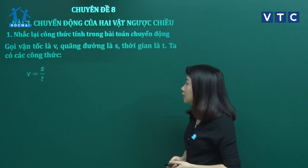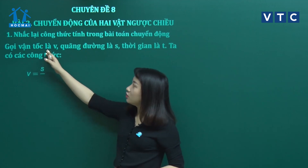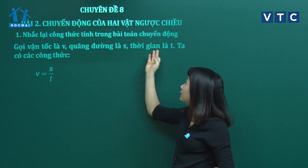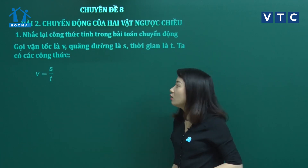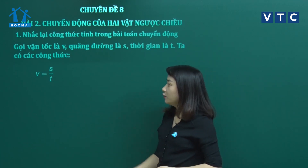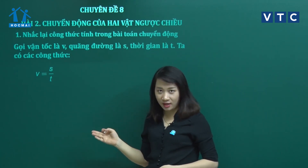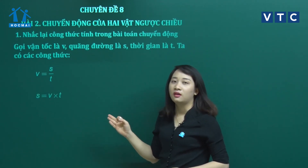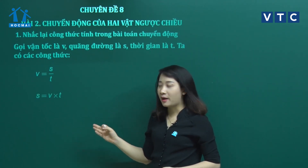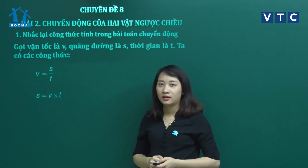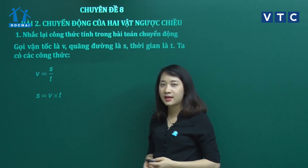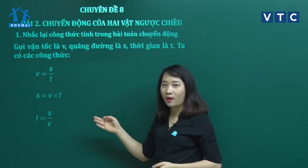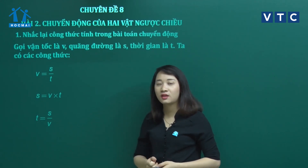Nếu chúng ta có vận tốc là V, quãng đường là S và thời gian là T, thì ta sẽ có các công thức: V bằng S trên T - vận tốc bằng quãng đường chia thời gian. Quãng đường thì bằng V nhân T - quãng đường bằng vận tốc nhân thời gian. Thời gian T thì sẽ bằng quãng đường S chia cho vận tốc V.